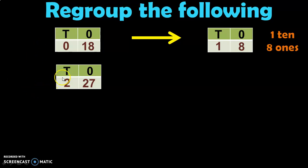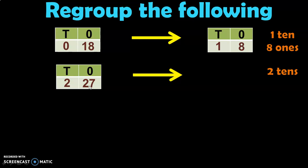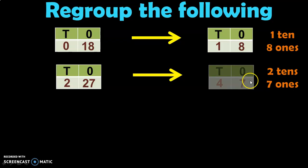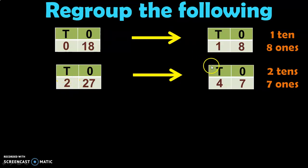Next example: you have 2 Tens and 27 Ones. In such cases, always first look at the Ones place where you have 27. 27 can be written as 2 Tens and 7 Ones. So 7 will be retained in the Ones place and the 2 Tens will be moved to the Tens place. You already have 2 there, so 2 plus 2 gives you 4 Tens and 7 Ones, which makes 47.